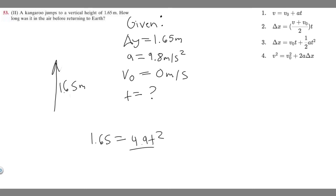And then we can divide both sides by 4.9 and then if we want to get rid of the t squared we'll square root both sides. So essentially t is going to be equal to the square root of 1.65 divided by 4.9. So if you plug that in your calculator, the square root of 1.65 divided by 4.9 is going to give you 0.58, so t is going to be equal to 0.58 seconds.